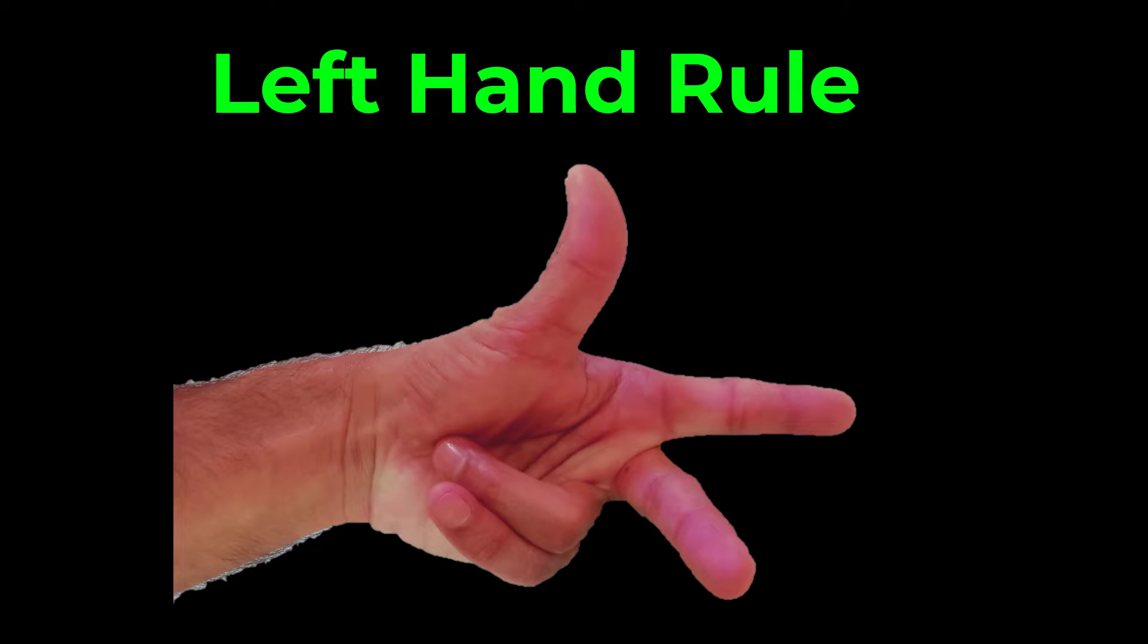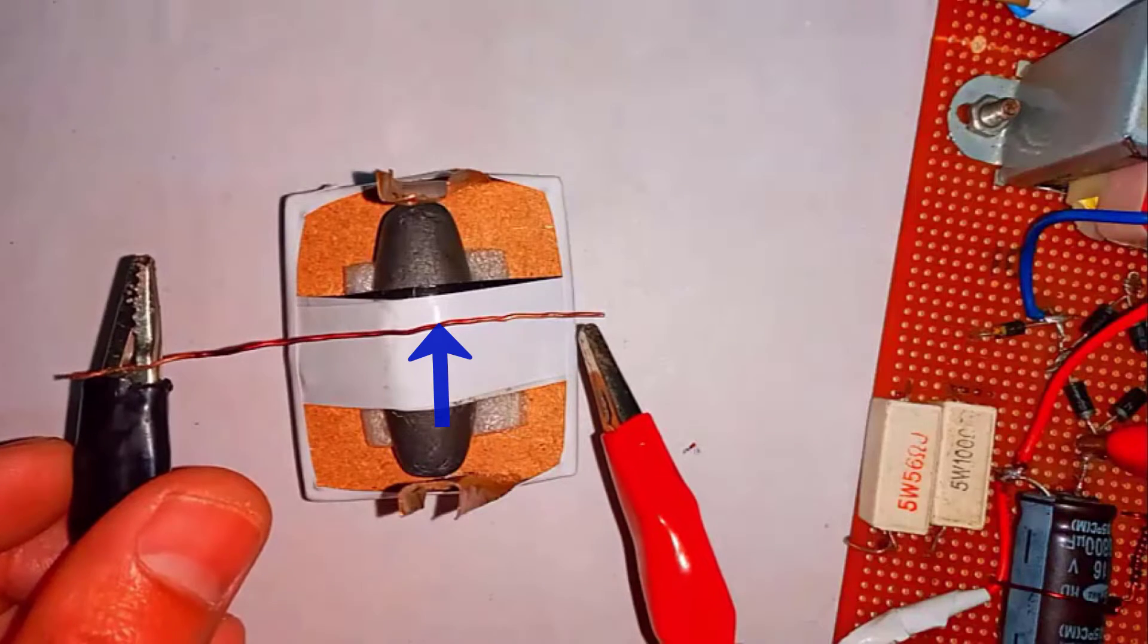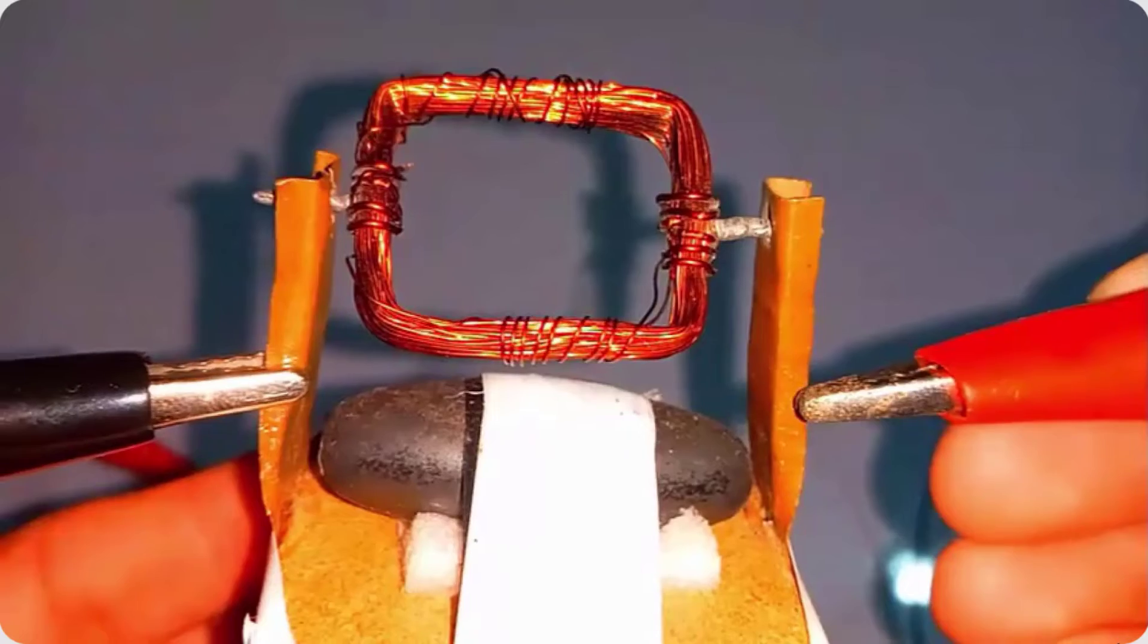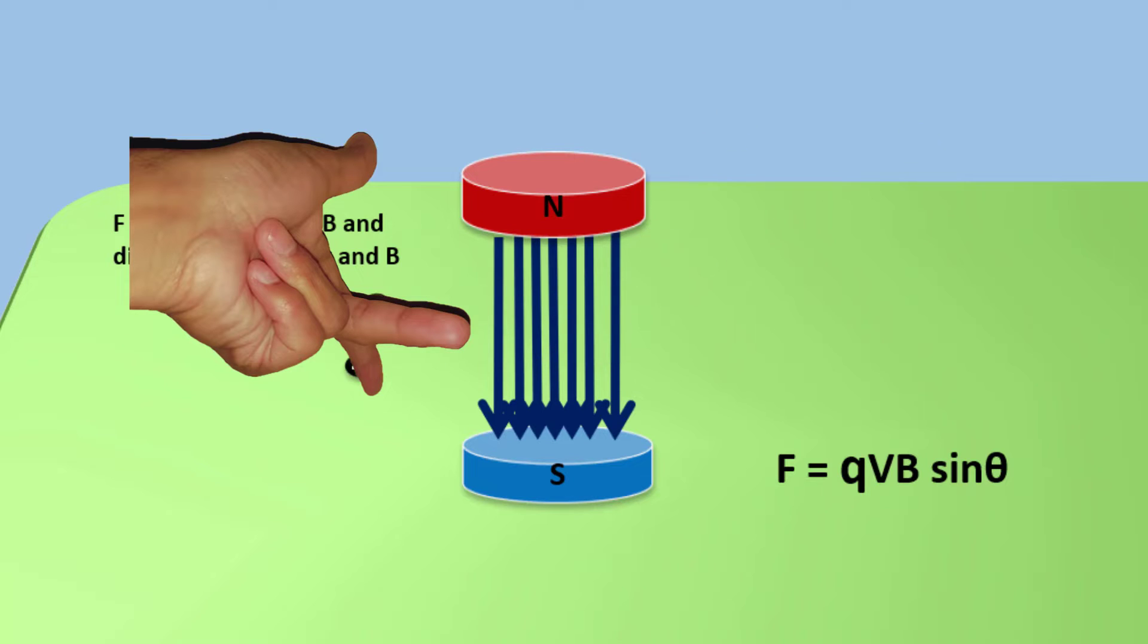We use left hand rule to find the direction of magnetic force acting on a current carrying conductor, a rectangular coil, or a charge moving in a magnetic field.